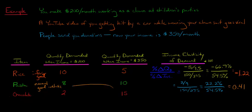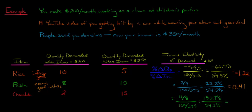With chocolate, the quantity went from 2 to 15 — a big change for a clown who really likes chocolate. The actual change is 13, divided by the average demanded of 8, then divided by 150 over 275. That gives us 162.5% in the numerator divided by 54.5% in the denominator, equaling 2.8. Chocolate is a normal good, but with a value greater than 1 it is a normal elastic good.